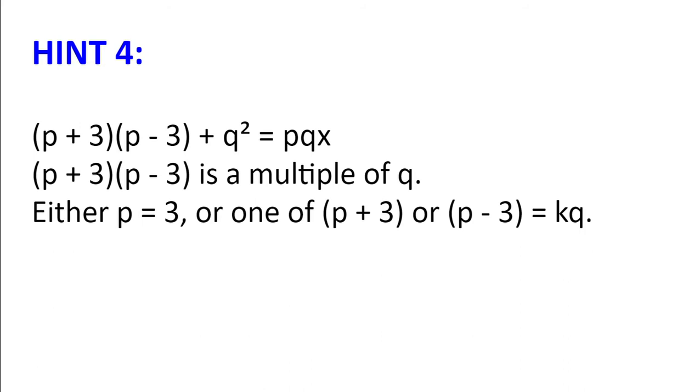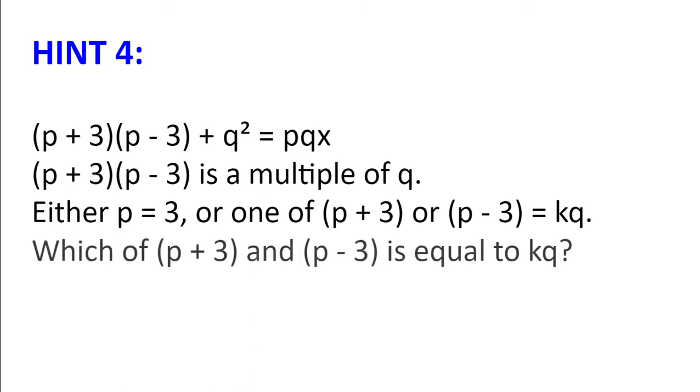So we then have either p equals 3, which makes p plus 3 multiplied by p minus 3 zero, or because q is prime, one of p plus 3 or p minus 3 is of the form k multiplied by q, where k is a positive integer. So which of p plus 3 and p minus 3 can be equal to kq? What do you know about p and q that can help you answer this?